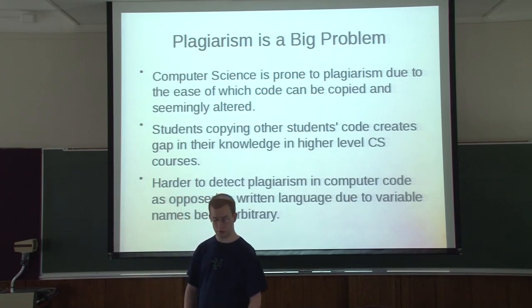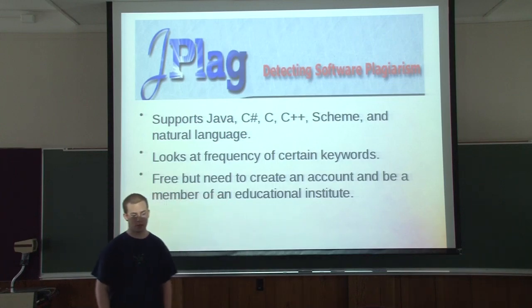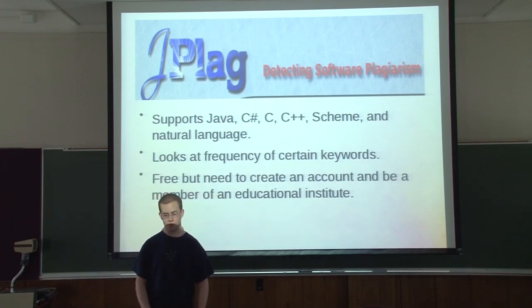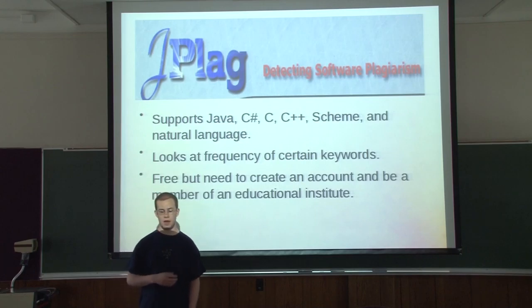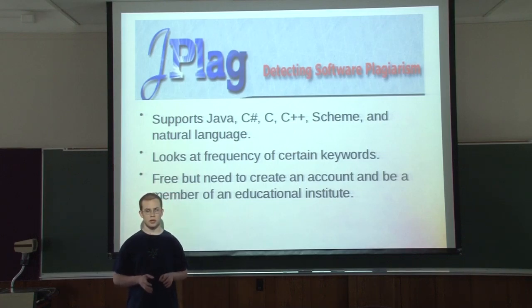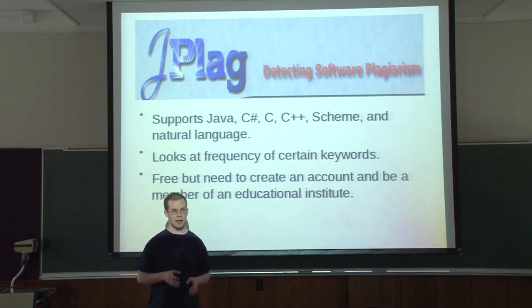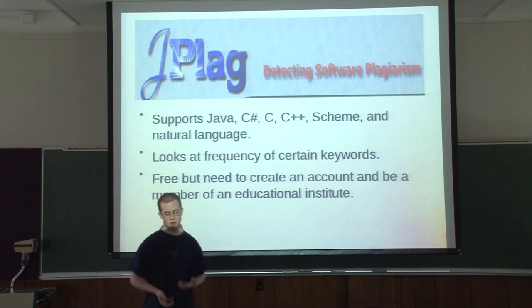So there are already a couple of solutions out there. The first one is Jplag. It supports Java, C-sharp, and a couple of different languages. The way it tries to detect plagiarism is by looking at the frequency of certain keywords — if, else, else if — that's all I can really gather online. But if you think about looking at just a few keywords, from program to program it's found to be very similar. There's not much differentiation in how many if-statements or else-statements you could have. So I don't feel it's the best solution.